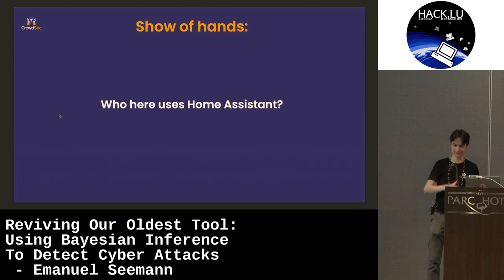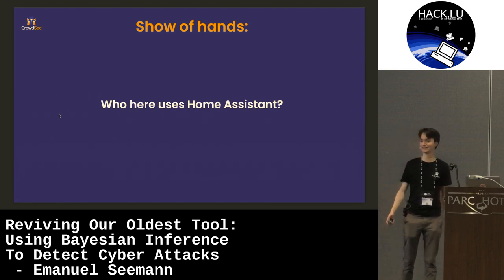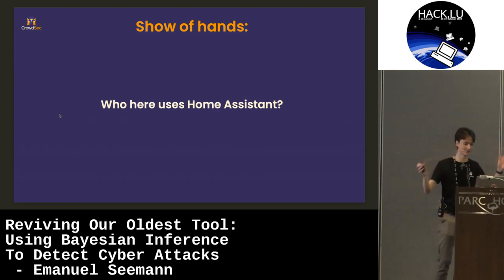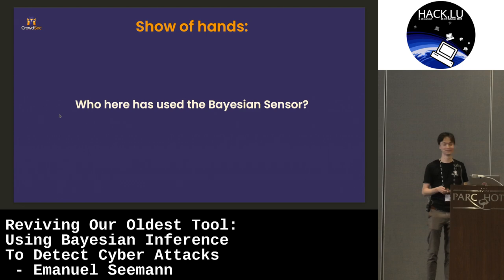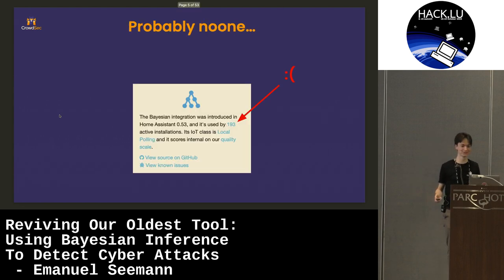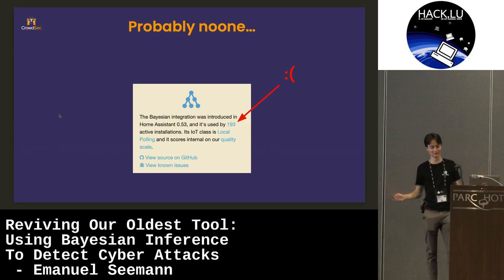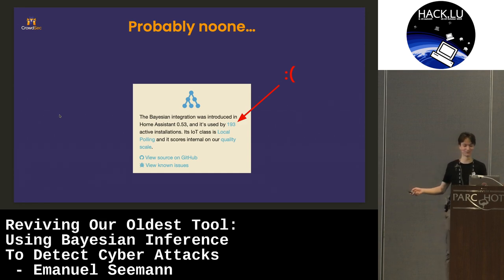Show of hands — who here uses Home Assistant? That's surprisingly few people. It's a tool you can use to basically hook up your Raspberry Pi to any type of smart light, smart fridge, smart whatever in your home. It's great. Of those people, who here has used the Bayesian sensor? Yeah, that was expected. On the Home Assistant side, this is in-core Home Assistant and it's used by 193 people, which is a bit sad because it's a great tool. Maybe if you go home and pay attention, you can use it at home thanks to my talk.